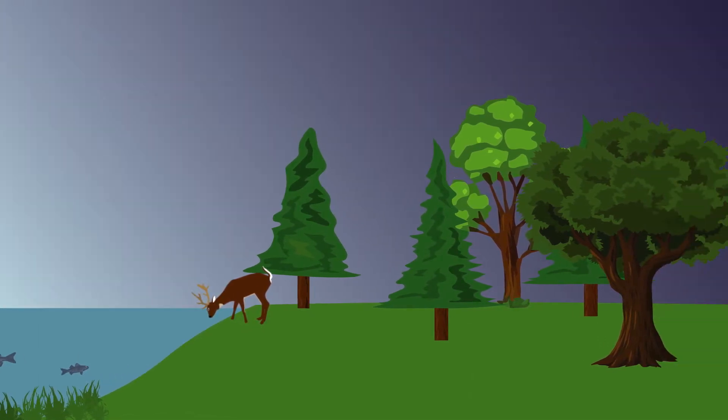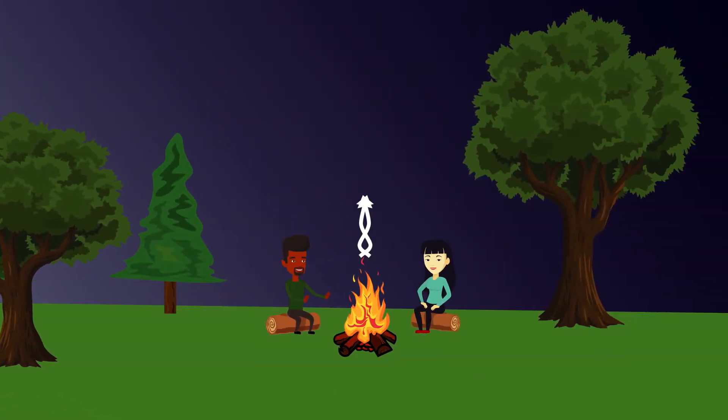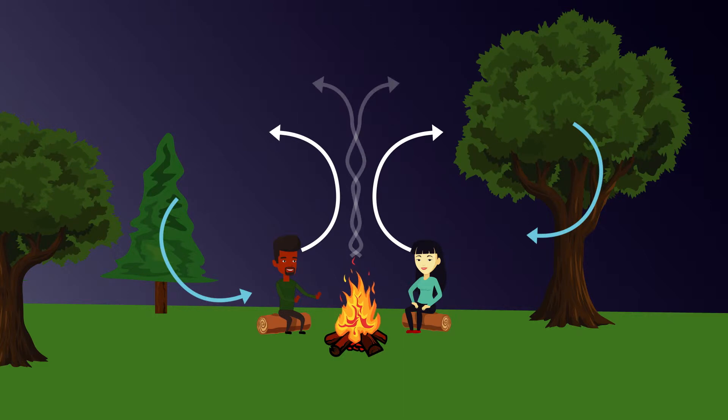The carbon cycle is nature's way of reusing carbon atoms, which travel from the atmosphere into organisms in the Earth, and then back into the atmosphere, over and over again.